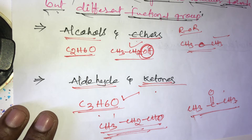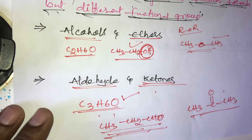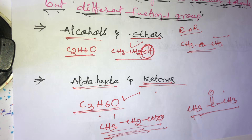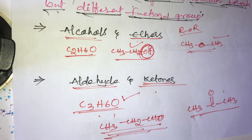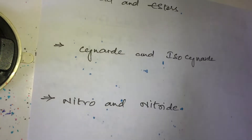So aldehydes and ketones both have the molecular formula C3H6O but different functional groups. Therefore, aldehydes and ketones are examples of functional isomers — compounds having the same molecular formula but different functional groups.